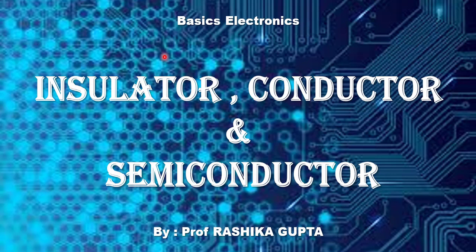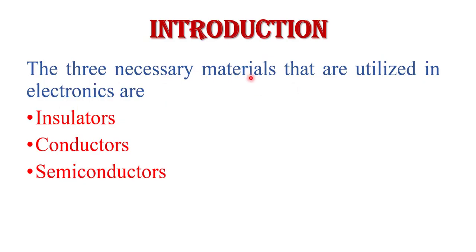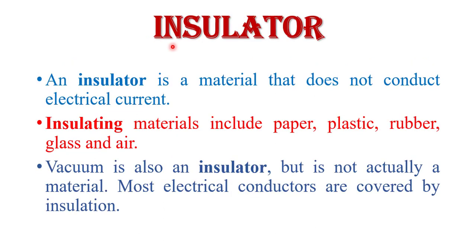Hello friends, welcome to Quick Learn Tutorial Series. In this video I will explain insulators, conductors, and semiconductors. These are the three necessary materials utilized in electronics. An insulator is a material that does not conduct electric current, or we can say it is a material in which current does not flow easily. Materials include paper, plastic, rubber, glass, and air. Vacuum is also an insulator but it is not a material.